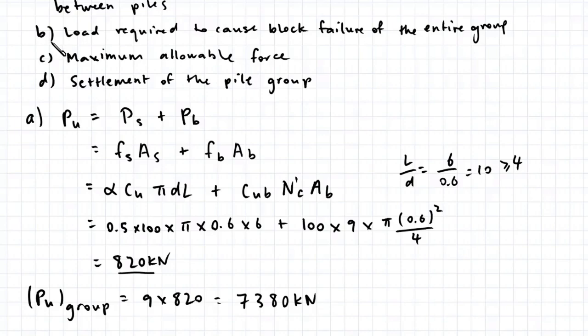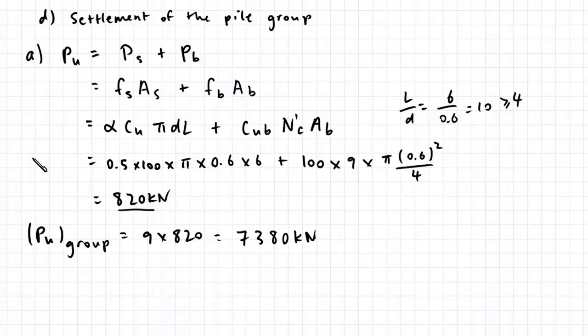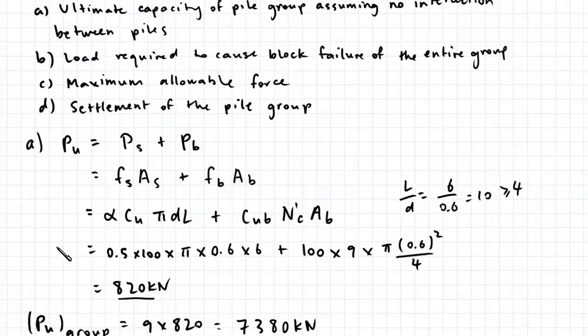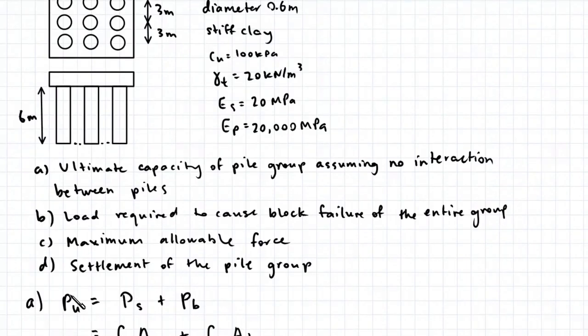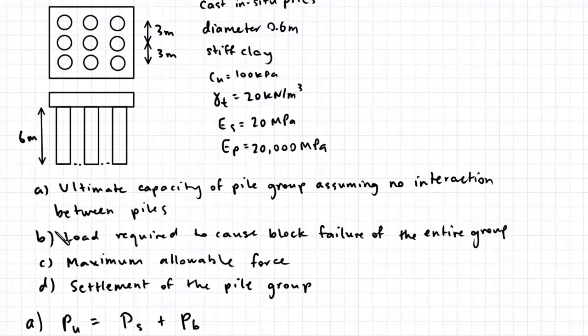Let's move on to part B, the load required to cause block failure of the entire group. Again we have Pu equal to Ps plus Pb. Since we're considering the pile group as a single block, we need to determine the width of the block to find the area of the shaft and base.